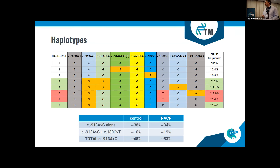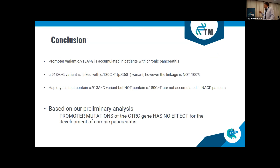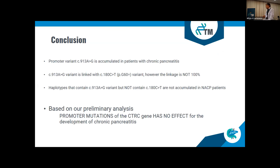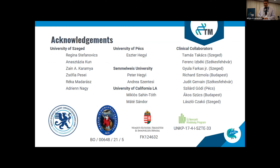In summary, this promoter variant is accumulated in patients with chronic pancreatitis, and it is linked to the known G60G variant, though the linkage is not 100%. Haplotypes containing this promoter variant but not the G60G variant are not accumulated in non-alcoholic chronic pancreatitis patients. Based on our preliminary analysis, promoter mutations of the CTRC gene have no independent effect on the development of chronic pancreatitis. Thank you very much for your attention.